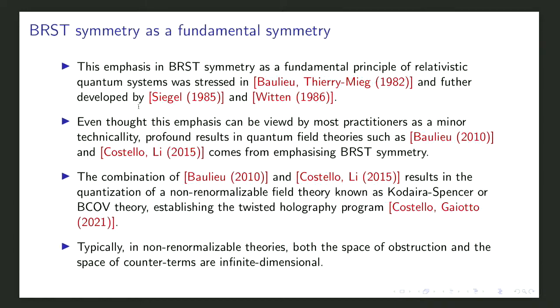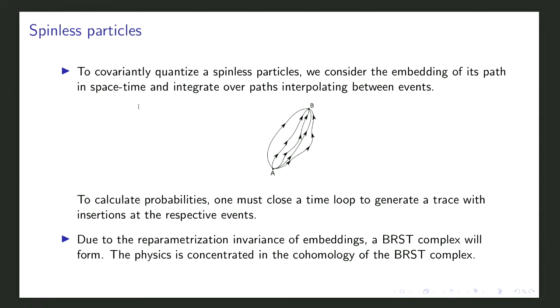Typically in non-renormalizable theories both the space of obstructions and the space of counterterms are infinite-dimensional. What this BRST symmetry does in this context is to kill one against the other: if you try to construct a theory without anomalies, you eventually fix all the counterterms, because there are an infinite number of anomalies to avoid.